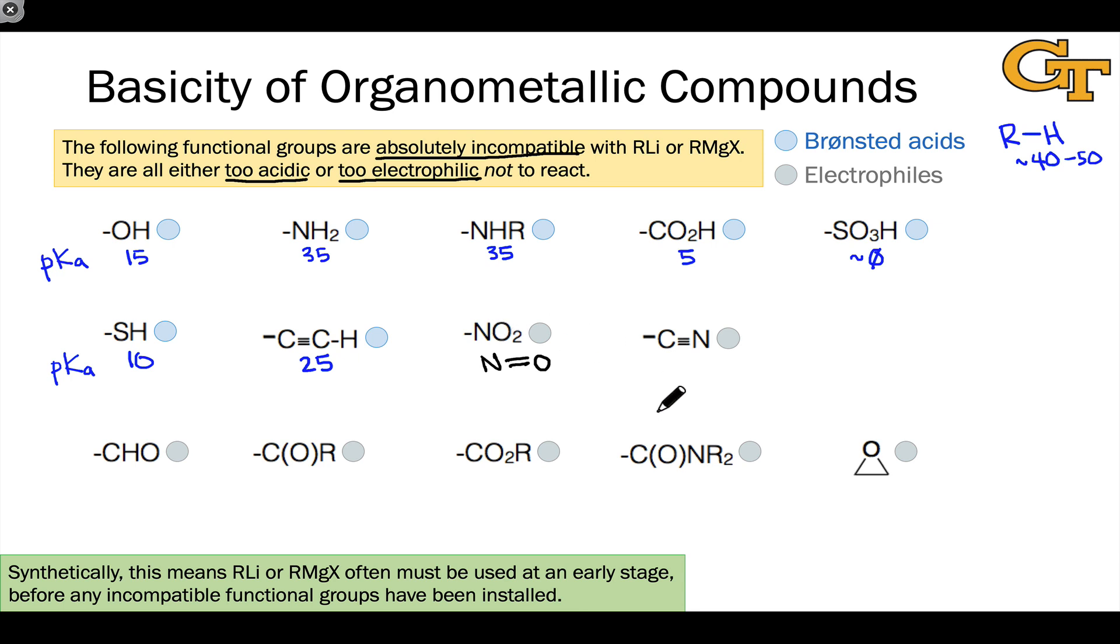So for example, NO2 contains the N double bond O group. The cyano group obviously contains a polarized CN triple bond. Aldehydes and ketones both contain the carbonyl group, which we'll see very shortly, reacts with organolithiums and Grignard reagents quite quickly.